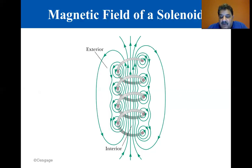Notice that the field lines inside the solenoid are nearly parallel, uniformly spaced and close together. As a result, the field inside the solenoid is strong and approximately uniform. The exterior field at the sides of the solenoid is non-uniform, much weaker than the interior field and opposite in direction to the field inside the solenoid.